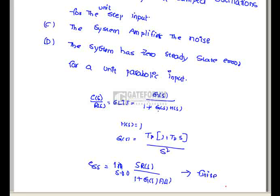But in option D it's specified as zero. Hence option D is the wrong statement regarding the above closed loop feedback system. Hence option D is correct.